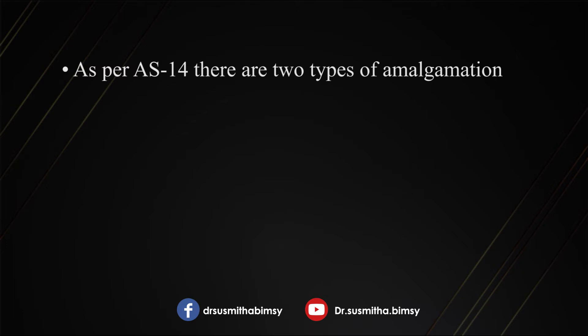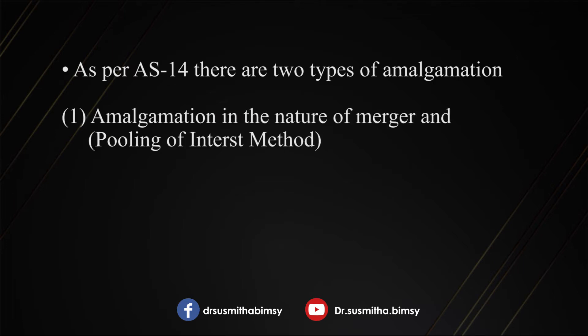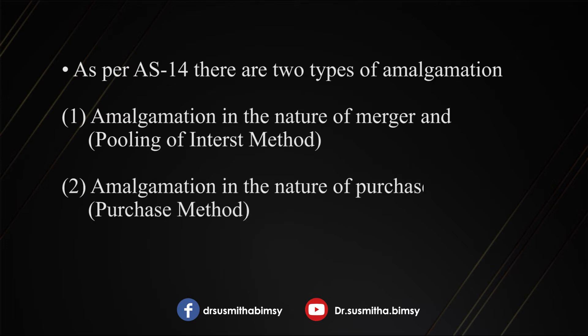Before we start discussing the journal entries in the books of the transferee company, it's important to note the types of amalgamation. AS 14 gives guidance on how to treat the books of the transferee company. We have two methods: the first one is the pooling of interest method, also known as the merger method. The second one is the purchase method. When amalgamation is in the nature of merger, you use the merger method; when it is in the nature of purchase, you use the purchase method.